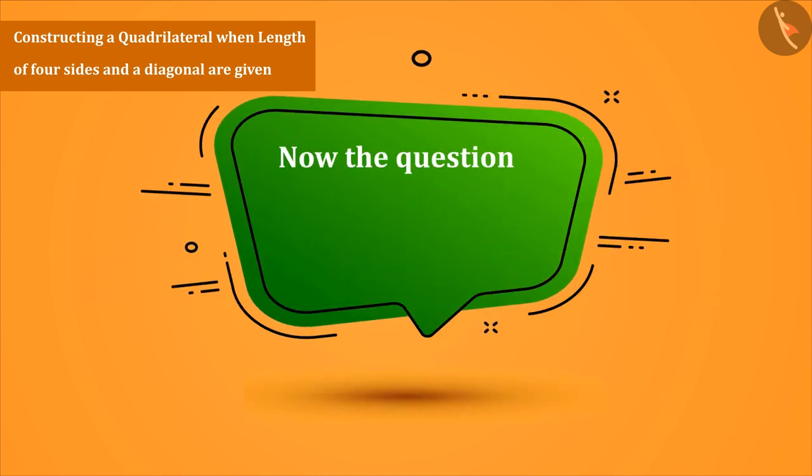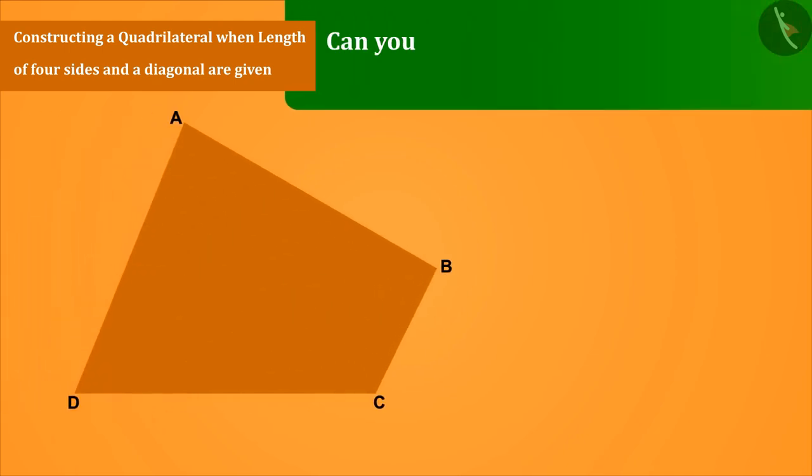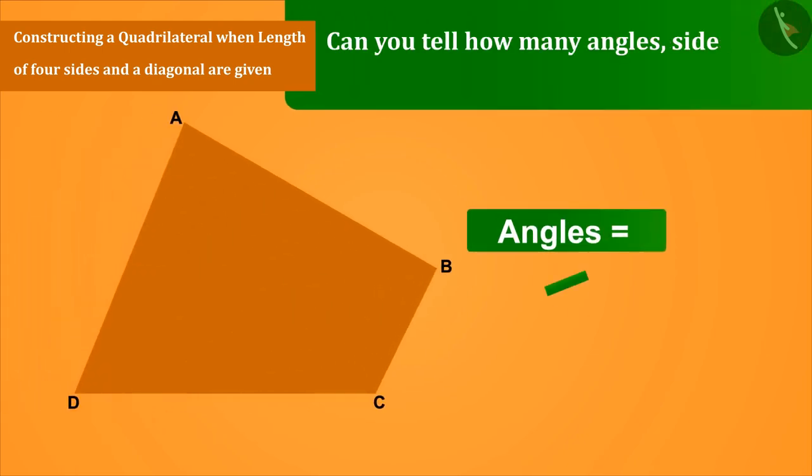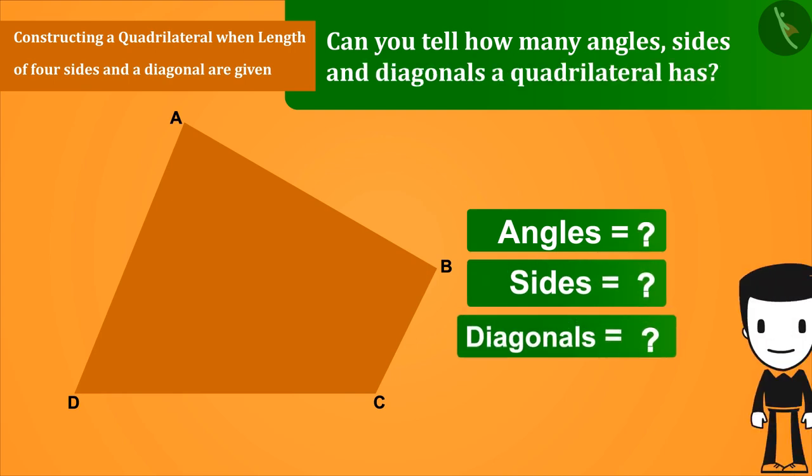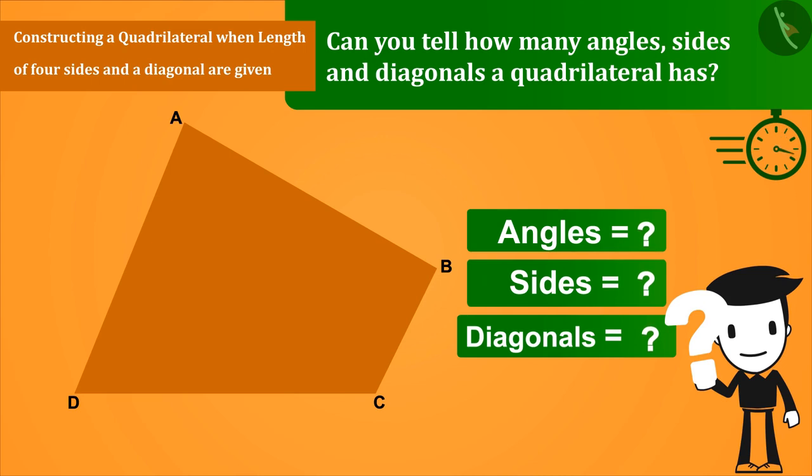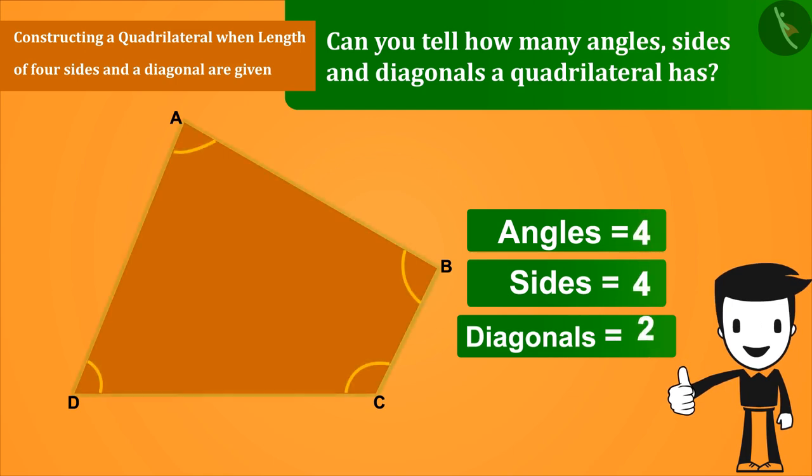Now the question is how is a quadrilateral formed? Let's see. Can you tell how many angles, sides and diagonals does a quadrilateral have? Quadrilateral has four angles, four sides and two diagonals.